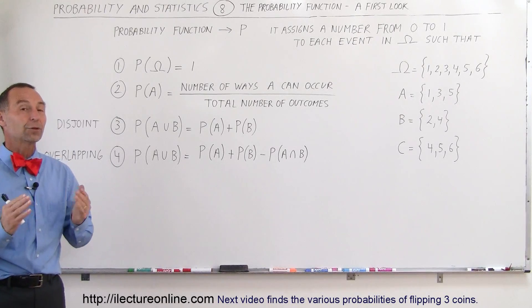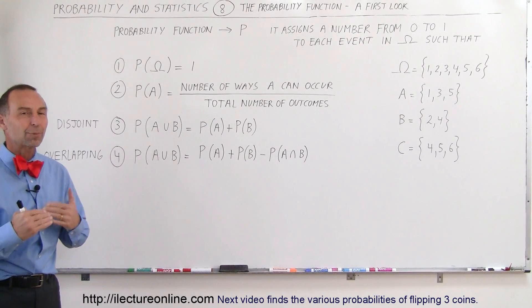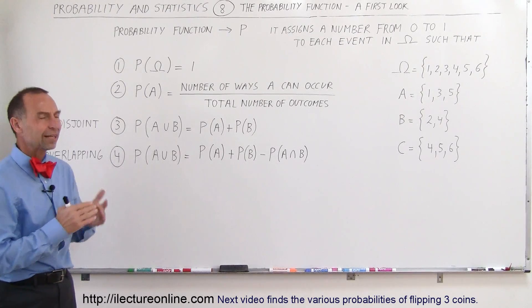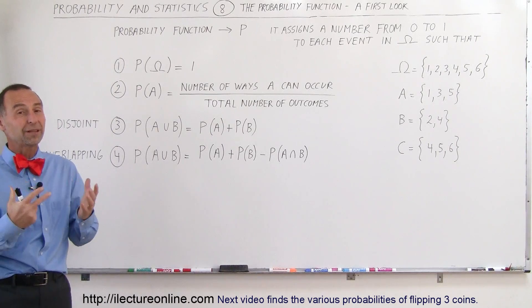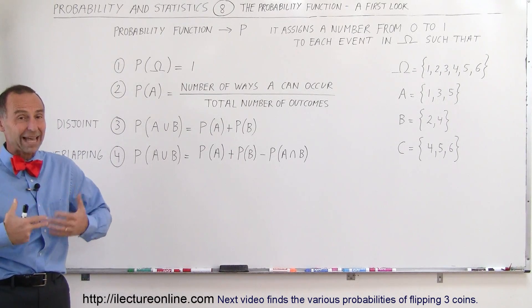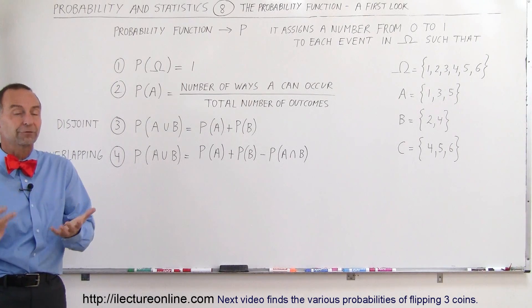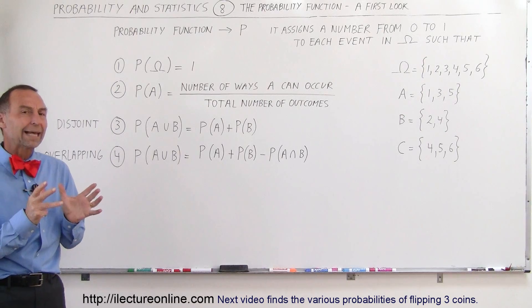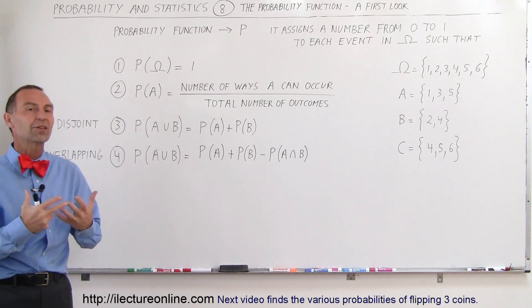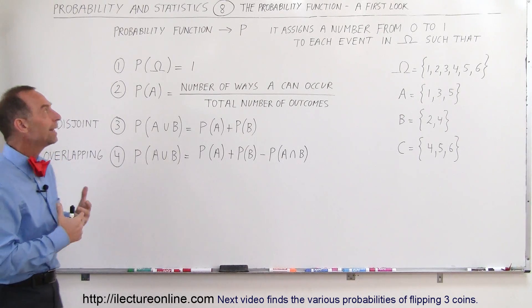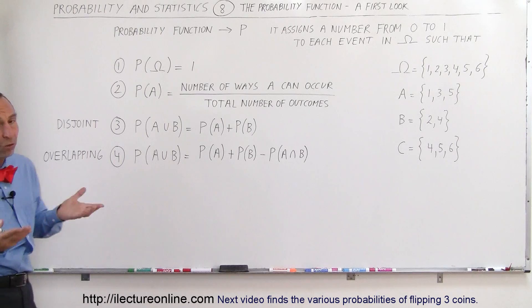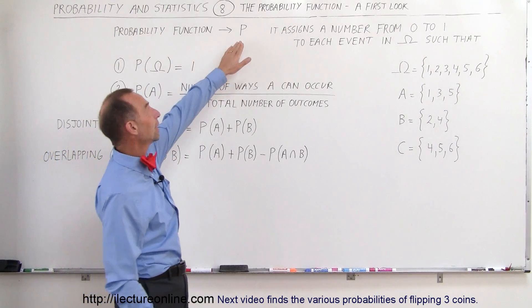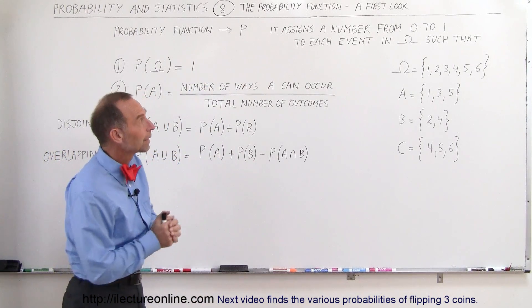Welcome to ElectronLine. Now we're going to take a first look at the probability function. The reason I said 'a first look' is because a probability function can actually be a mathematical function, like an equation, but in this case we're going to look at it in a simplistic manner. We use the letter P to indicate the probability function.